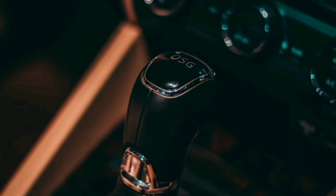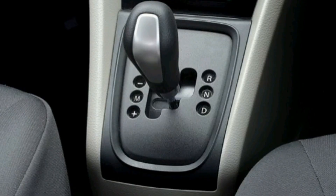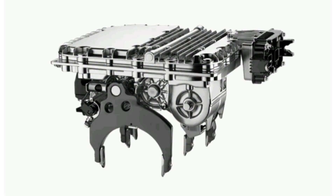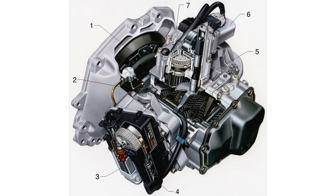4. Automated Manual Transmission, AMT. AMT is a combination of manual transmission and automatic transmission. In this system, the driver can manually change gears using a shift lever, similar to a conventional manual transmission. However, it is not necessary to depress the clutch pedal, as an automated system performs the clutch function automatically. Some cars with AMT also offer automatic driving modes where the system changes gears itself.